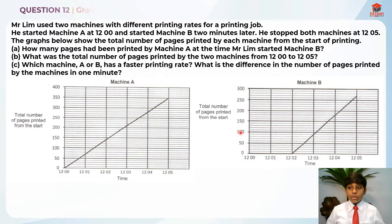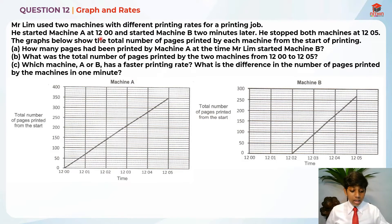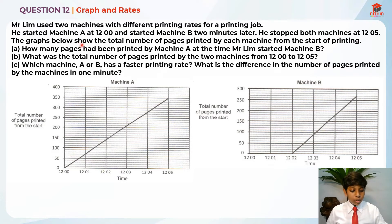This is question 12 and this question is set on graphs and rates. So first, let's read the question for Part A. Mr. Lim used two machines with different printing rates for a printing job. He started machine A at 12 o'clock and started machine B two minutes later. He stops both machines at 12.05. The graphs below show the total number of pages printed by each machine from the start of printing.